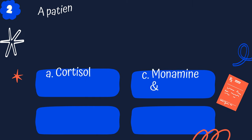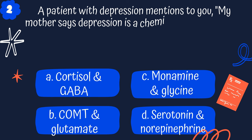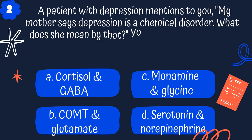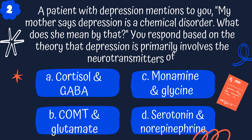Question 2. A patient with depression mentions, my mother says depression is a chemical disorder — what does that mean? You respond based on the theory that depression is primarily involved with neurotransmitters of: A. Cortisol and GABA. B. COT and glutamate. C. Monoamine and glycine. Or D. Serotonin and norepinephrine.